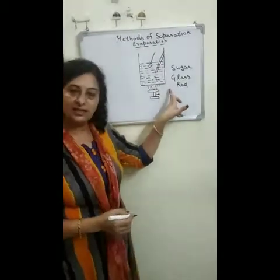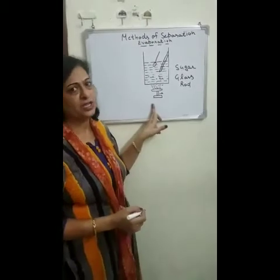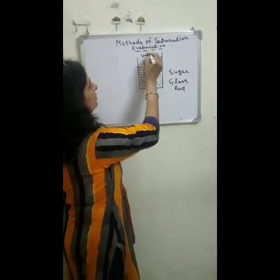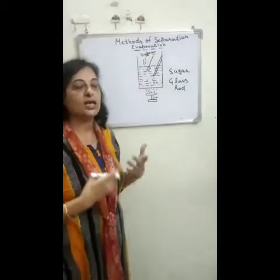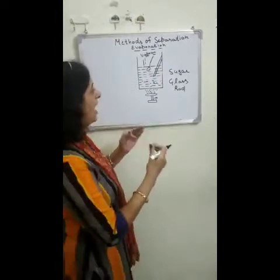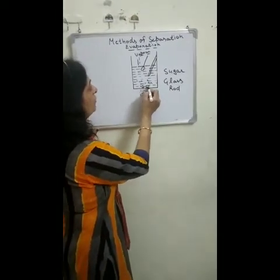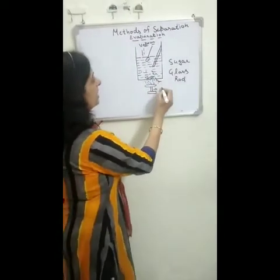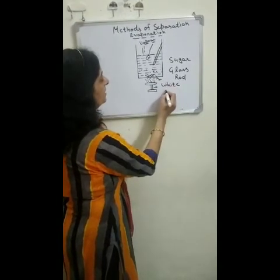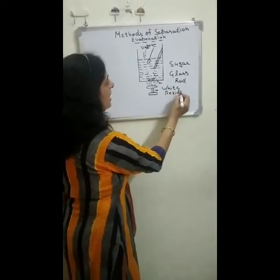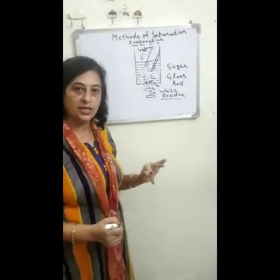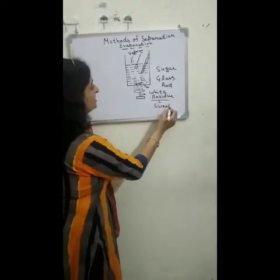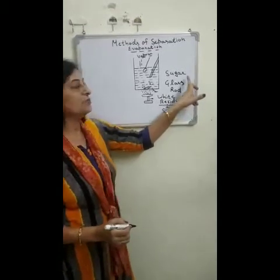Now we want to get the sugar back. We can get our sugar back through the process of evaporation. Take the beaker and heat it. When we heat it, the water slowly converts into its vapor form. When all the water evaporates, white residue is left at the bottom of the beaker. If we taste this residue, it is sweet — meaning these are the residues of sugar.